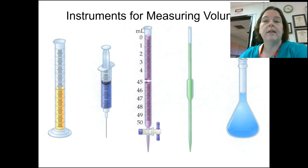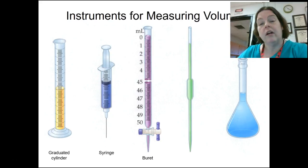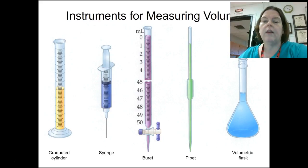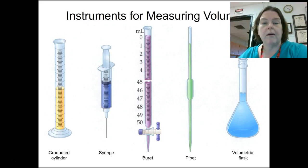Measuring instruments: instruments that we use for measuring volume are as follows. We have a graduated cylinder. We can use syringes if we need to. Something called a burette — we don't use it very often in our class, but we do use it in AP Chemistry. It looks like a graduated cylinder with a little syringe tip on it. We have pipettes — small plastic ones, but also volumetric and transfer pipettes. And finally, a volumetric flask, which we don't use very often in advanced chemistry but do use in AP Chemistry. The smaller the instrument gets, the more accurate it gets.